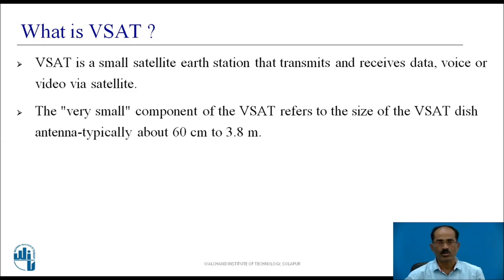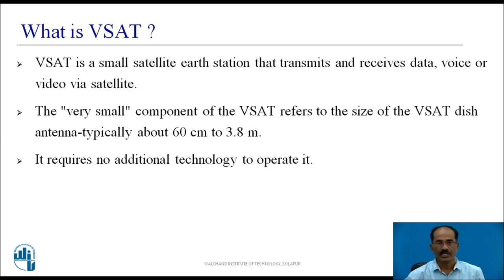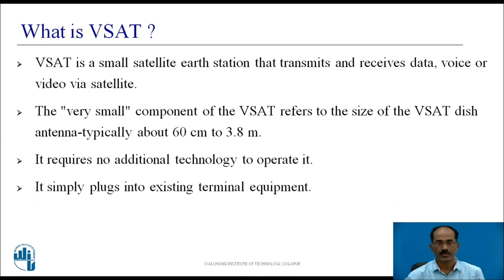The 'very small' component of VSAT refers to the size of the VSAT dish antenna, typically about 60 cm to 3.8 m. This 'very small' refers to the size of the dish antenna. VSAT requires no additional technology to operate — it simply plugs into existing terminal equipment.